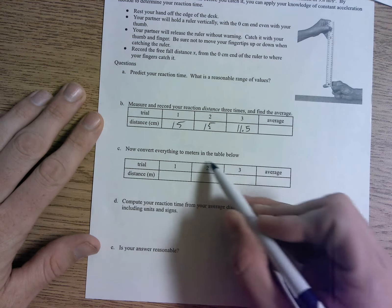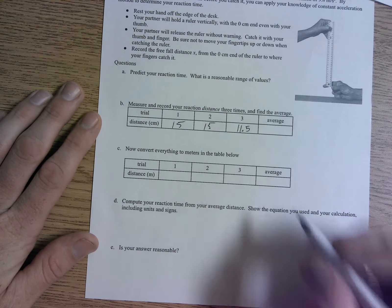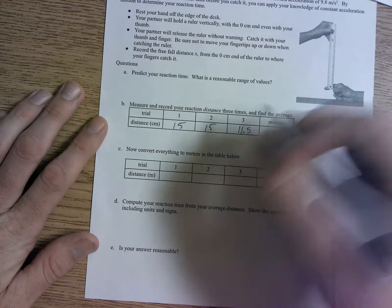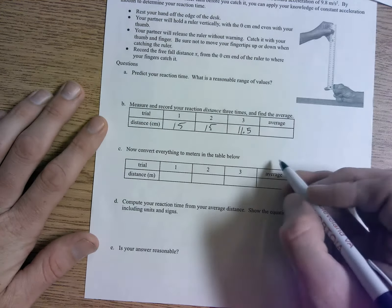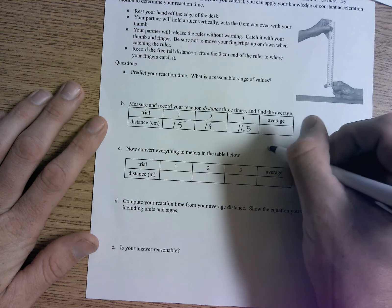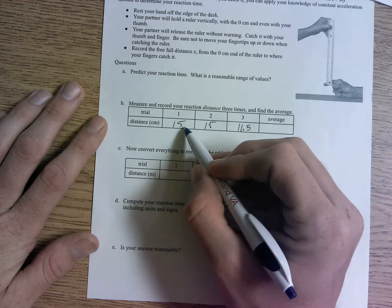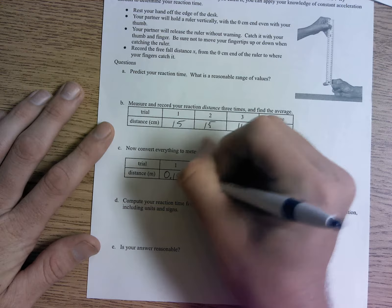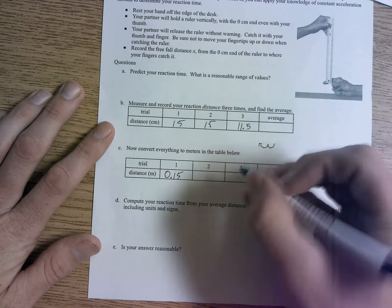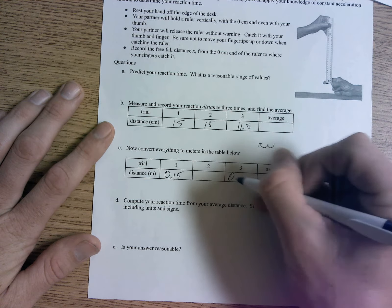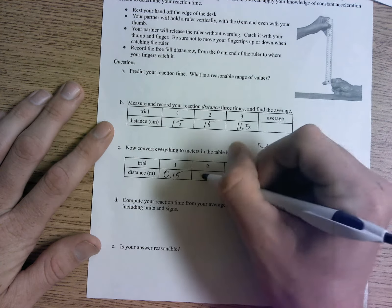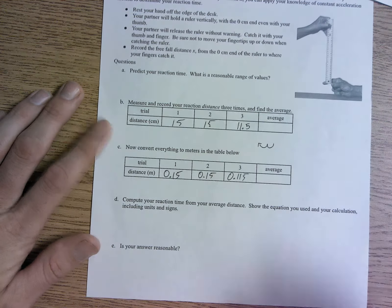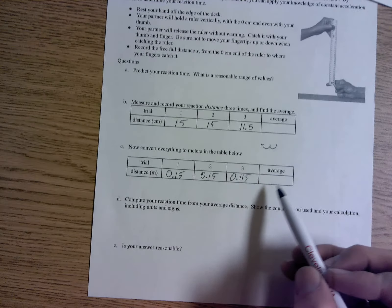Now convert everything to meters. So notice here we've got our centimeter conversions and we're going to convert that to meters. Remember, if we're going from centimeters to meters, we're going to move our decimal once, twice to the left. So here we have 15, we're going to move it once, twice to the left, that'd be 0.15, and so on. This will be 0.115. And then you'll calculate your average.